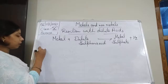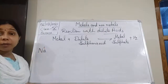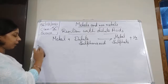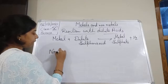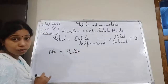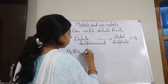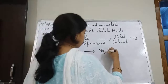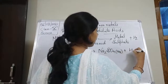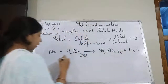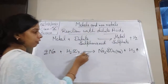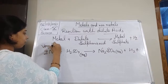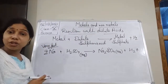Taking sodium as an example: sodium reacts very vigorously with dilute sulfuric acid. Na reacts with H₂SO₄ (aqueous, dilute) to form Na₂SO₄ (sodium sulfate, aqueous) and H₂ is released. Balancing: sodium, sulfate, and hydrogen are all balanced. This is a very fast reaction due to the high reactivity of sodium.